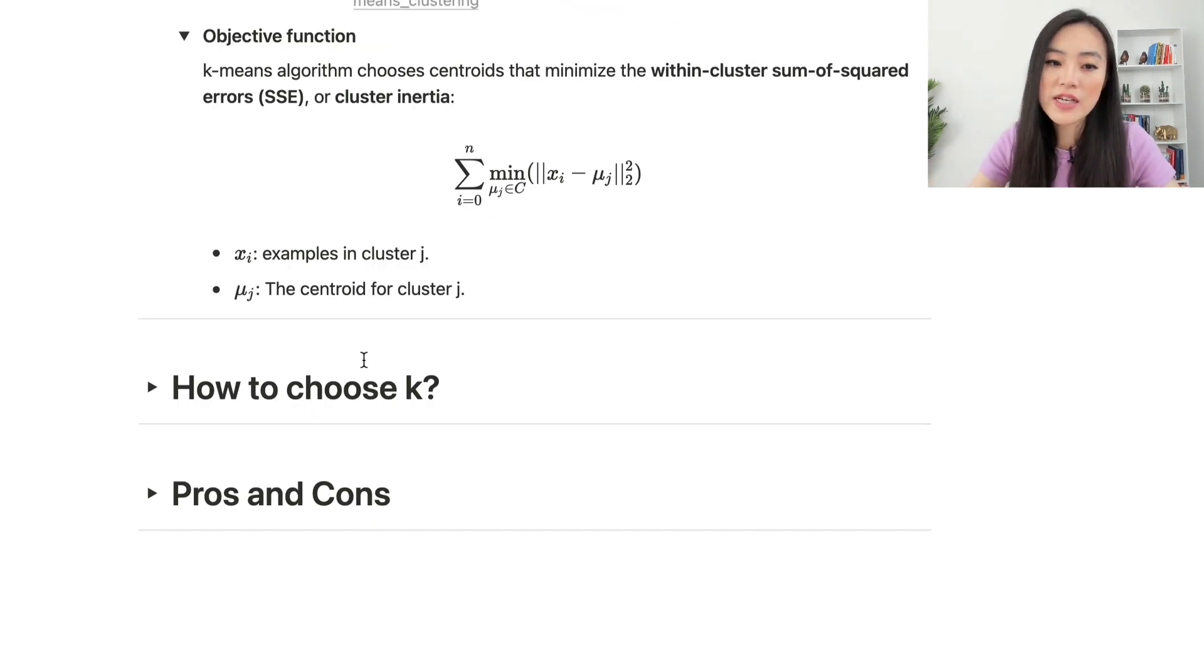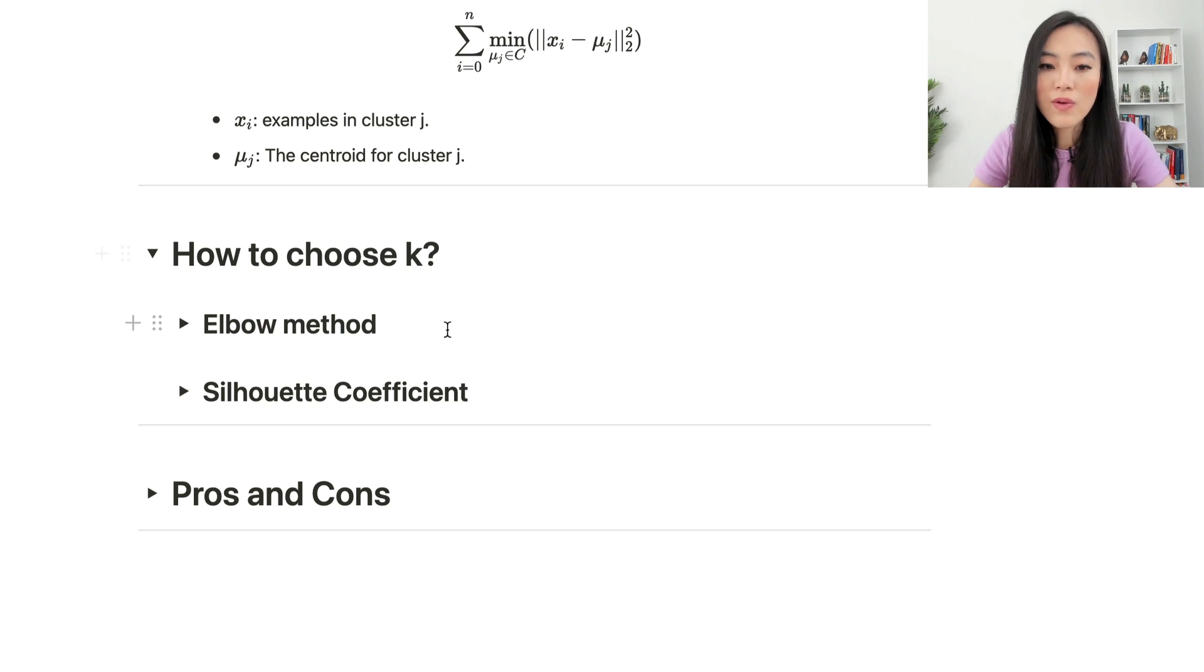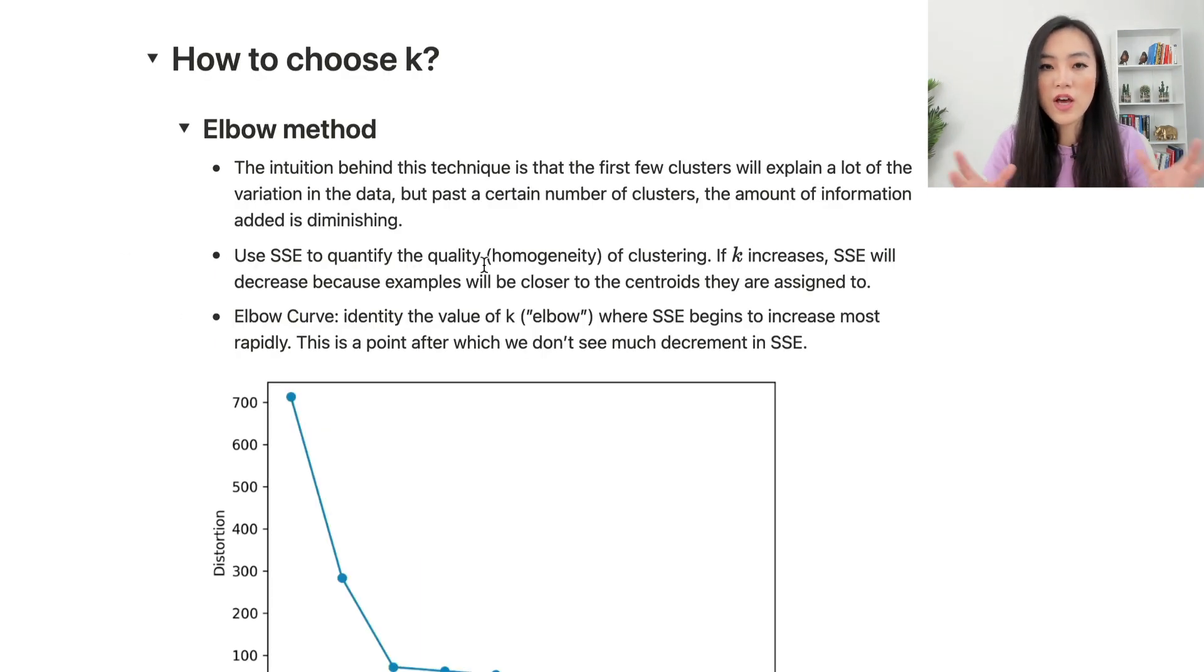Now let's move forward to the next section: how to choose K for K-means. There are two commonly used methods: elbow method and silhouette coefficient. Let's go over them one by one. The first method is elbow method. The intuition behind this technique is that the first few clusters will explain a lot of variation in the data, but after a certain number of clusters, the amount of information added is diminishing.